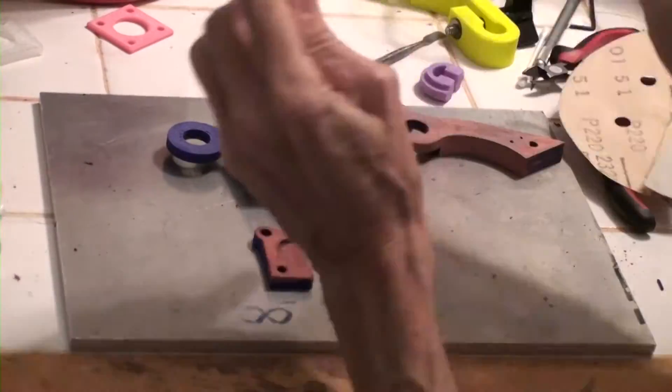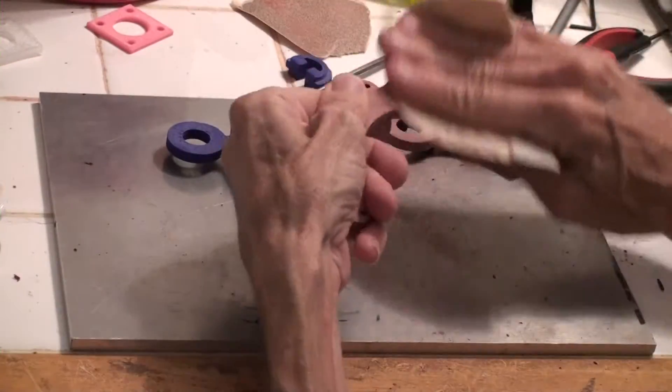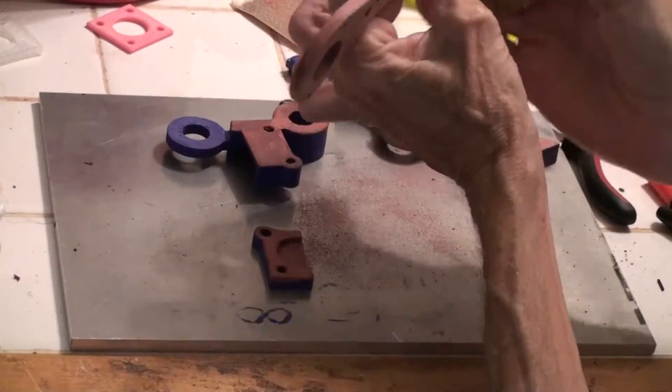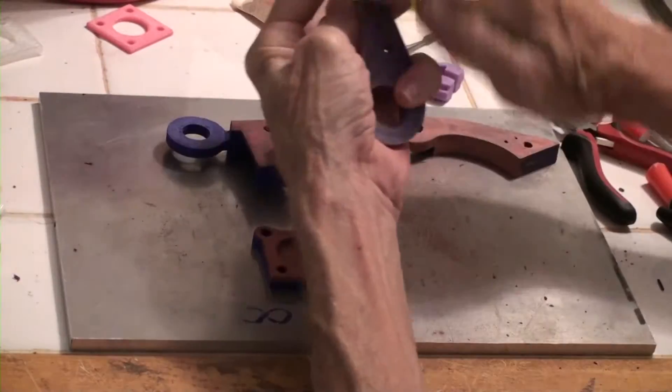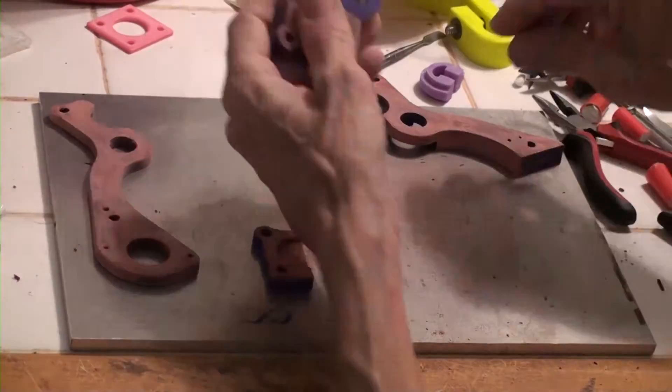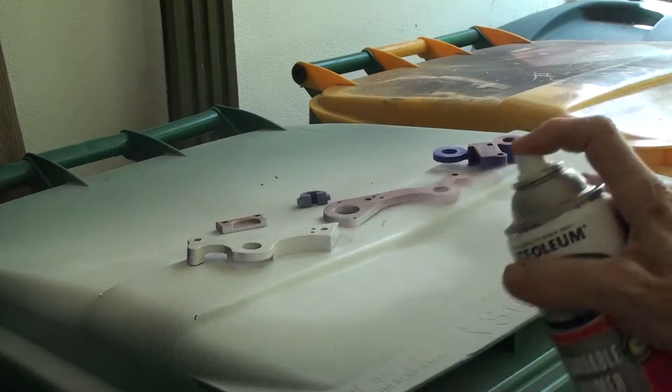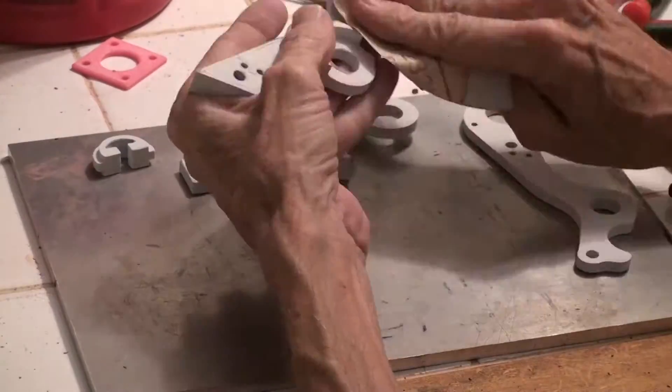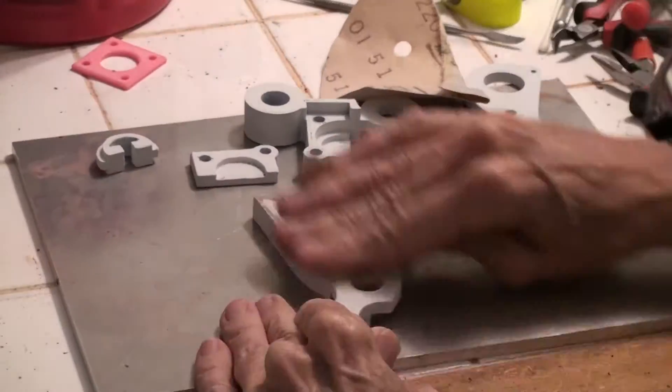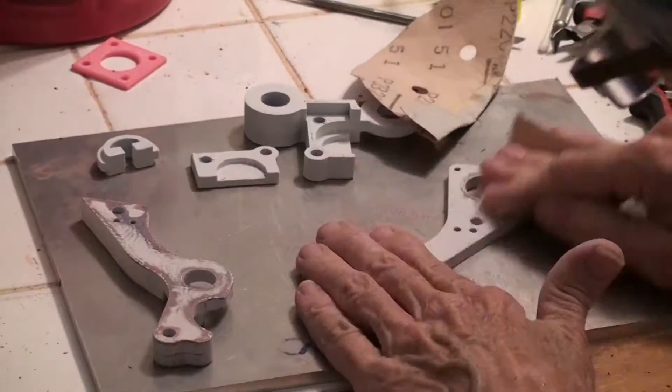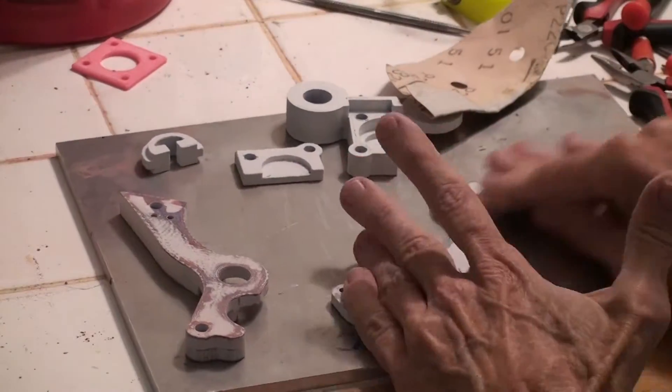Once the parts are sanded, I'll apply several coats of sandable primer paint. The sandable primer has a lot of filler in it, so it builds up a thick layer. And again, I'm sanding between coats.